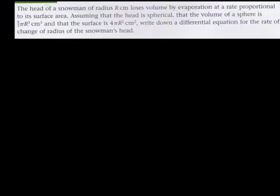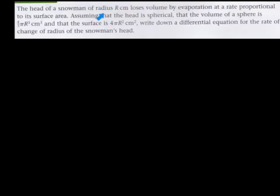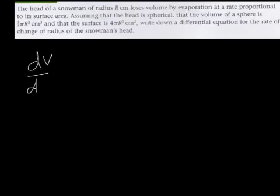Here we've got the head of a snowman of radius r. It loses its volume by evaporation at a rate proportional to the surface area. So the volume is decreasing — dv/dt — it's losing volume, and it's proportional, so it's minus k times the surface area A. That gives us the differential equation dv/dt = -kA.